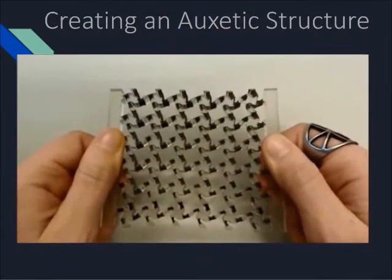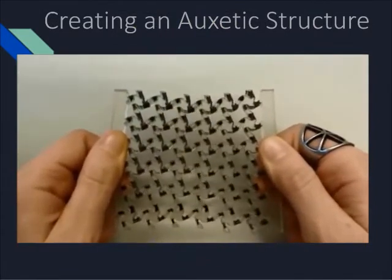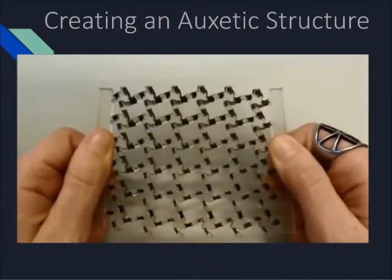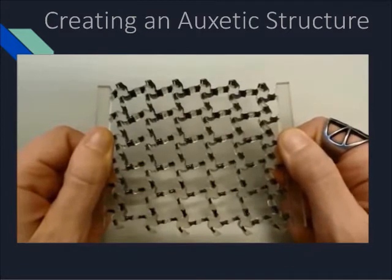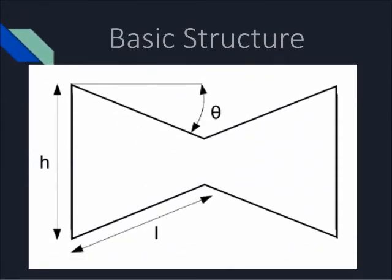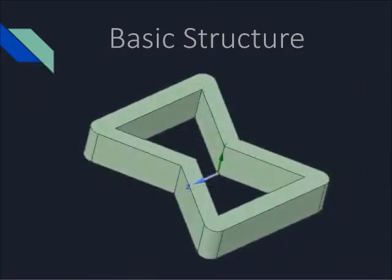Now that we have a solid understanding of negative Poisson's ratio, it's time to make our own auxetic structure. First, we must design a singular basic structure that can be repeated and will deform as desired. One common auxetic structure is the hourglass, shown here. This simple 2D pattern can easily be constructed in a 3D CAD software, as shown.